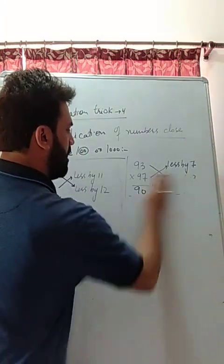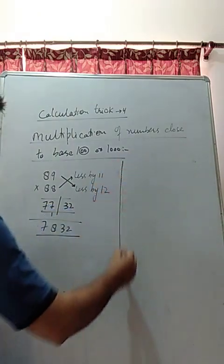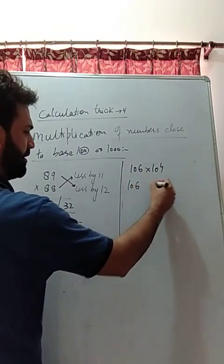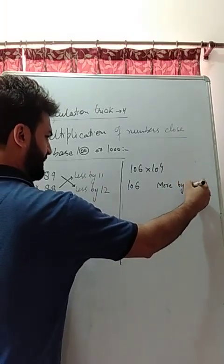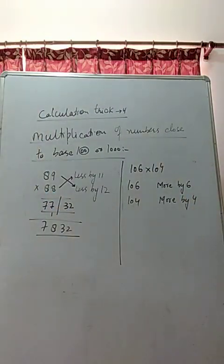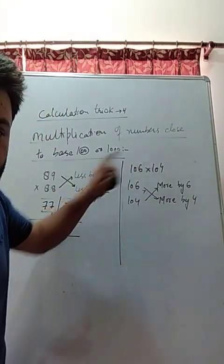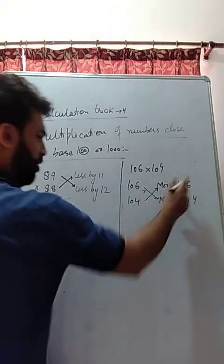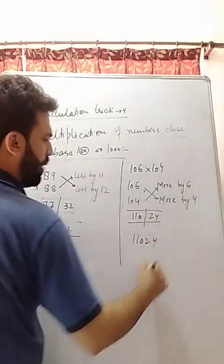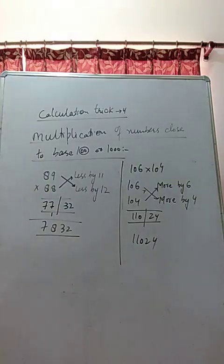Now if the numbers are like this: 106 into 104. Now they are more than 100 but close to 100. 106 is more by 6, 104 is more by 4. Now see how much it will be. What to do here? 106 plus 4—you have to cross add here if the numbers are more than 100. 106 plus 4 is 110, 104 plus 6 is 110. So write 110. 6 into 4 is 24. So the answer is 11024.